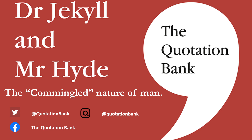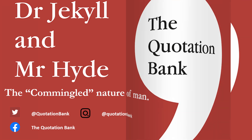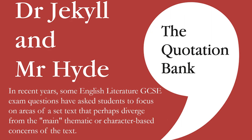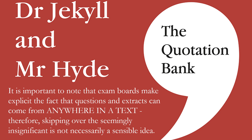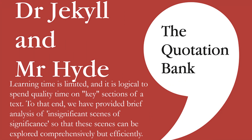Today we're looking at the idea of the co-mingled nature of good and evil within humanity that is depicted in Dr Jekyll and Mr Hyde. In recent years, some English Literature GCSE exam questions have asked students to focus on areas of a set text that perhaps diverge from the main thematic or character-based concerns of the text. It is important to note that exam boards make explicit the fact that questions and extracts can come from anywhere in a text, therefore skipping over the seemingly insignificant is not necessarily a sensible idea. Learning time is limited, and it is logical to spend quality time on key sections of a text. To that end we have provided brief analysis of insignificant scenes of significance, so that these scenes can be explored comprehensively but efficiently.